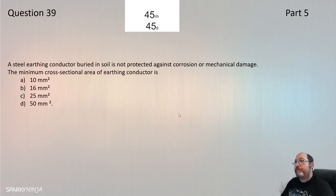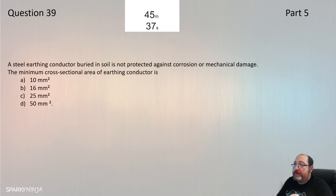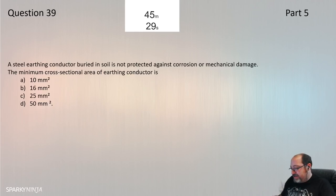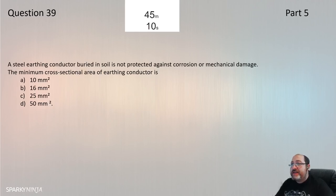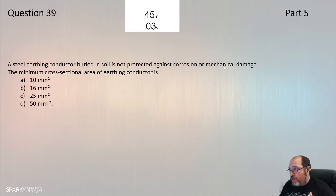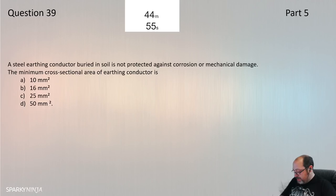Question 39: An earthing conductor buried in soil, not protected against corrosion or mechanical damage — what is the minimum size? This relates to Chapter 54, Table 54.1 — minimum cross-sectional area of buried earthing conductors. The conductor is steel, not protected against corrosion or mechanical damage. From Table 54.1: 50mm². Question 39 is D — 50mm².